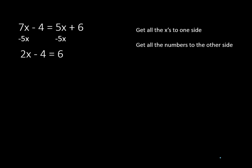Now to get the numbers from the left side over to the right side, I'm going to add 4 to both sides of the equation. Notice how adding 4 is going to get rid of the negative 4 from the left side and move it over to the right side. So now I have 2x is equal to 10.